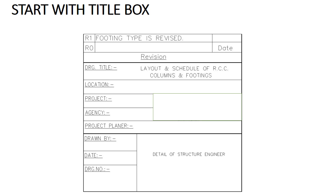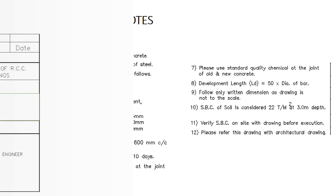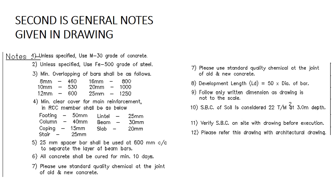The most important is the revisions of the drawings, which is given in the topmost part of the title box. On the construction site, only the final revision is used. An engineer cannot use outdated revisions on site. So this is the brief description of the title box. Now the second part of the structural drawing sheet is the general notes.